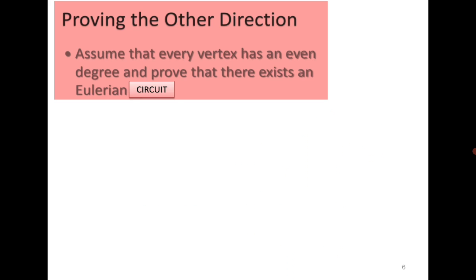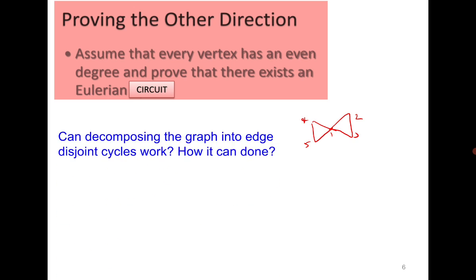The next side is: if the vertex has an even degree, then prove that there exists an Eulerian circuit. You can draw a very simple graph like this one: 1, 2, 3, 4, 5. There is an even degree and therefore the graph is Eulerian. But how do you prove it? Can you think of decomposing the graph into edge disjoint cycles? And if it can be decomposed into edge disjoint cycles, can you say the graph is Eulerian?